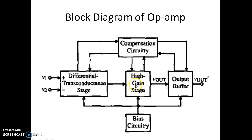Following the differential transconductance stage is the high gain stage, which introduces the sufficient required gain for the operational amplifier. This is followed by a buffer stage, which provides the required lower output impedance, current carrying capacity, and sourcing and sinking capacity. All three stages are provided the required bias using a bias circuitry block.